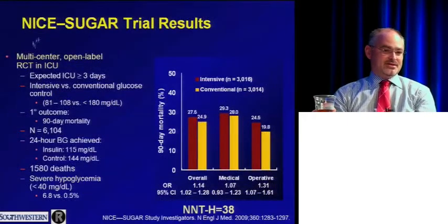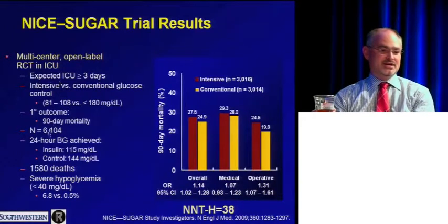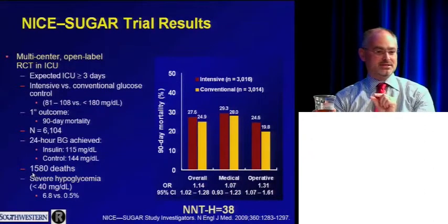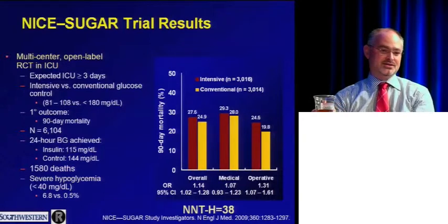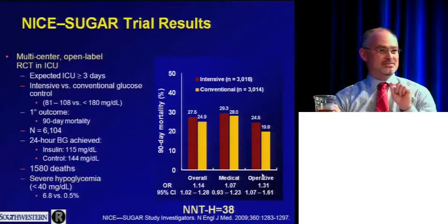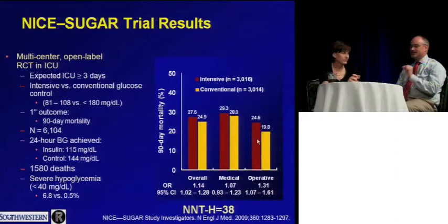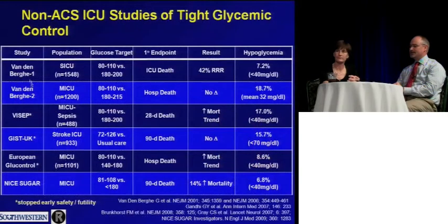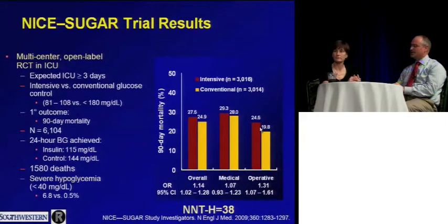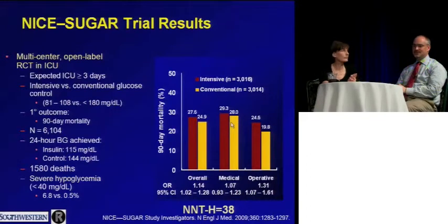The last of those studies is the NICE-SUGAR trial — 6,000 patients with 1,500 mortality events. They convincingly proved an increase in mortality with intensive glucose control. Importantly, even in a surgical ICU subset three times larger than the original Van den Berghe single-center study, there was increased mortality. It's worth noting that the original Van den Berghe study was largely cardiac surgery patients — 68% had undergone cardiac surgery — so it was a more specific population.